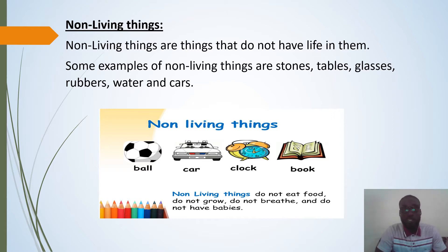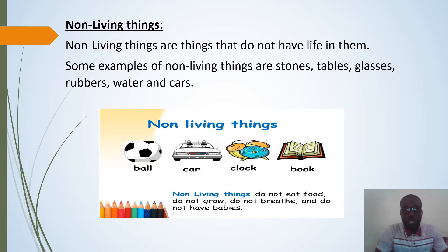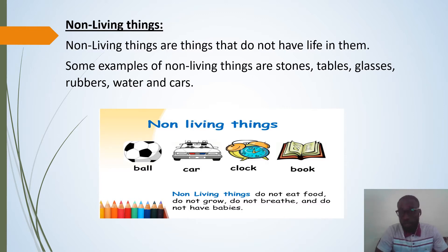Non-living things are things that do not have life in them. Some examples of non-living things are stones, tables, glasses, rubbish, water, cars, chairs, and shoes. Anything that has no life in it is a non-living thing.